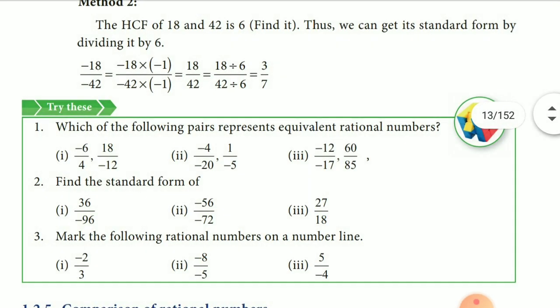Next, homework. Note it down. In your book, it is given Try these. Minus 6 by 7, 18 by minus 12. Whether it is an equivalent form of rational number or not. Next, minus 4 by minus 20, minus 1 by minus 5, minus 12 by minus 17, 60 by 80. Next is standard form. Standard form means the denominator must be a positive number. So, convert into positive number and simplify.